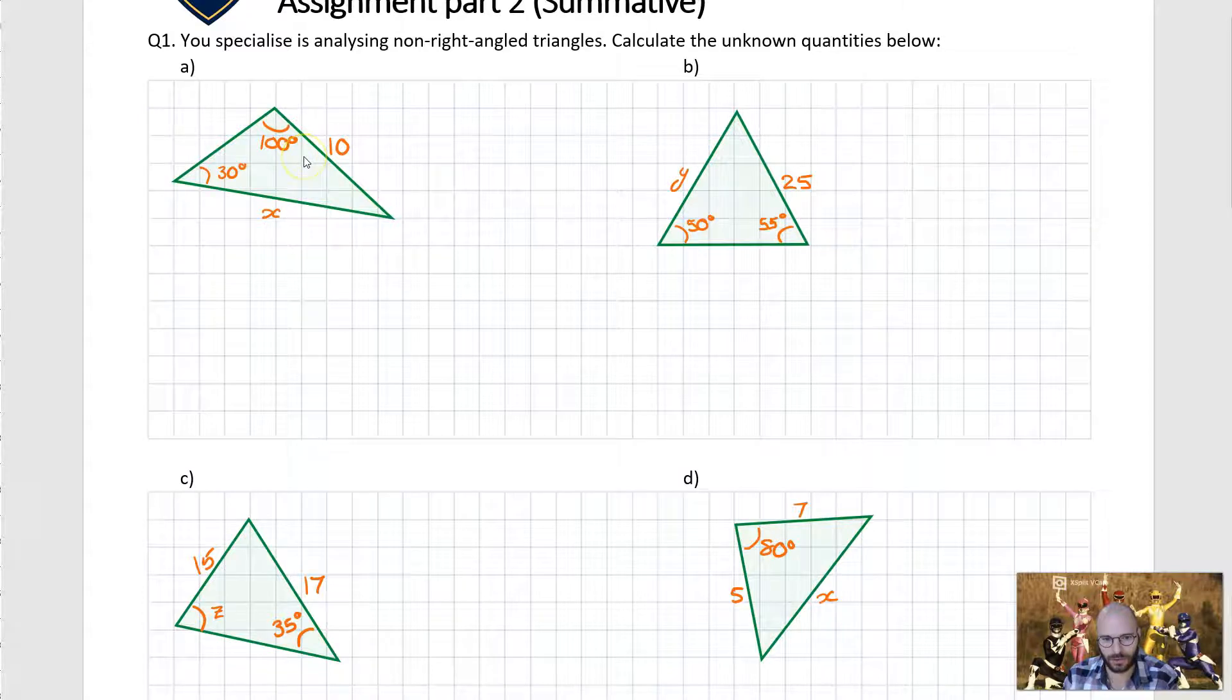So part A we've got a non-right-angled triangle. We have two known angles, a known side length and an unknown side length over here. Now because we've got two known angles corresponding to two sides, what we're going to be using is the sine rule. The first thing we do is we label all the quantities in our triangle.